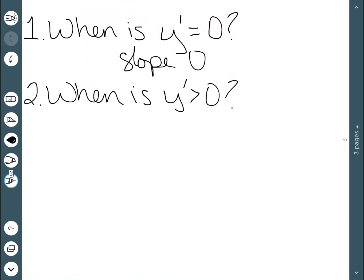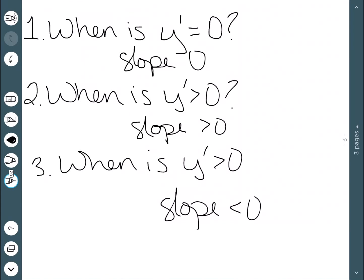The next thing is wanting to know whenever this derivative is bigger than 0, because then our slope will be greater than 0. And then finally, when is y prime less than 0? Because then our slope will be less than 0. So let's look at doing an example.